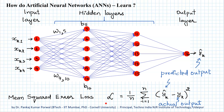To handle this, we start with the last layer — since nothing comes after it, the partial derivative of the loss function with respect to its weights can be found directly. Then we move to the previous layer, where we need partial derivatives from the next layer, which we have already computed. Continuing layer by layer backward, this process of updating weights using gradient descent starting from the last layer is called back propagation of error.